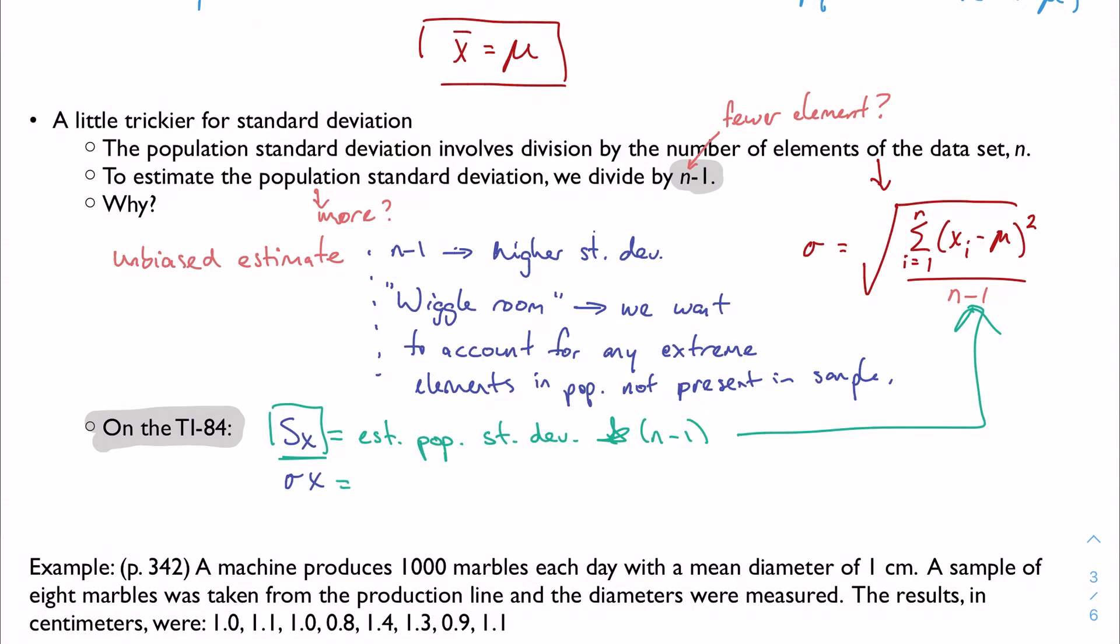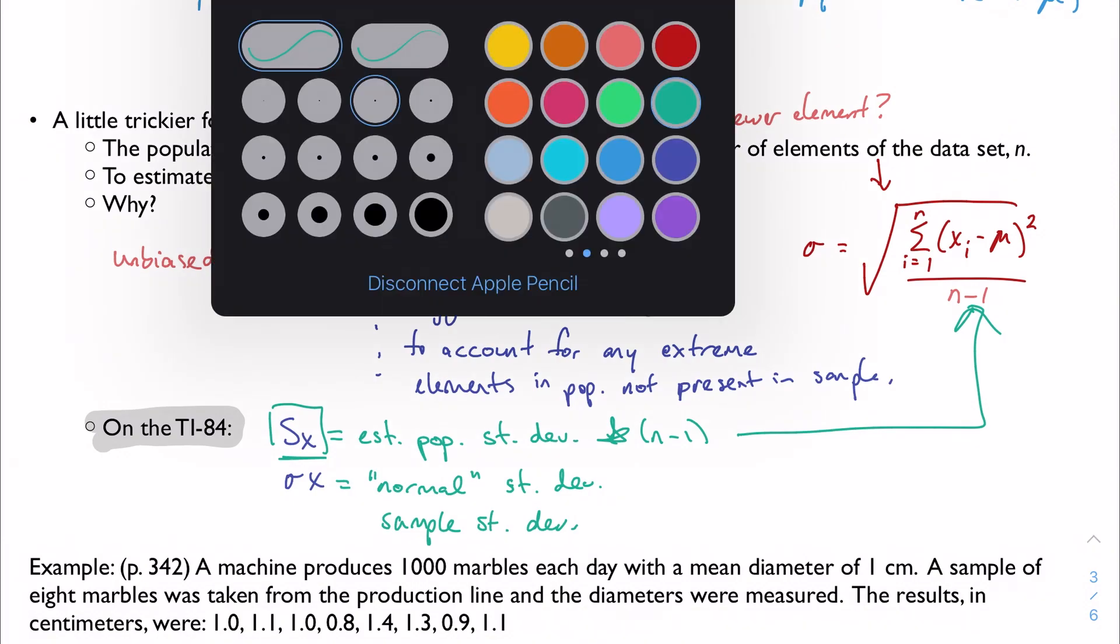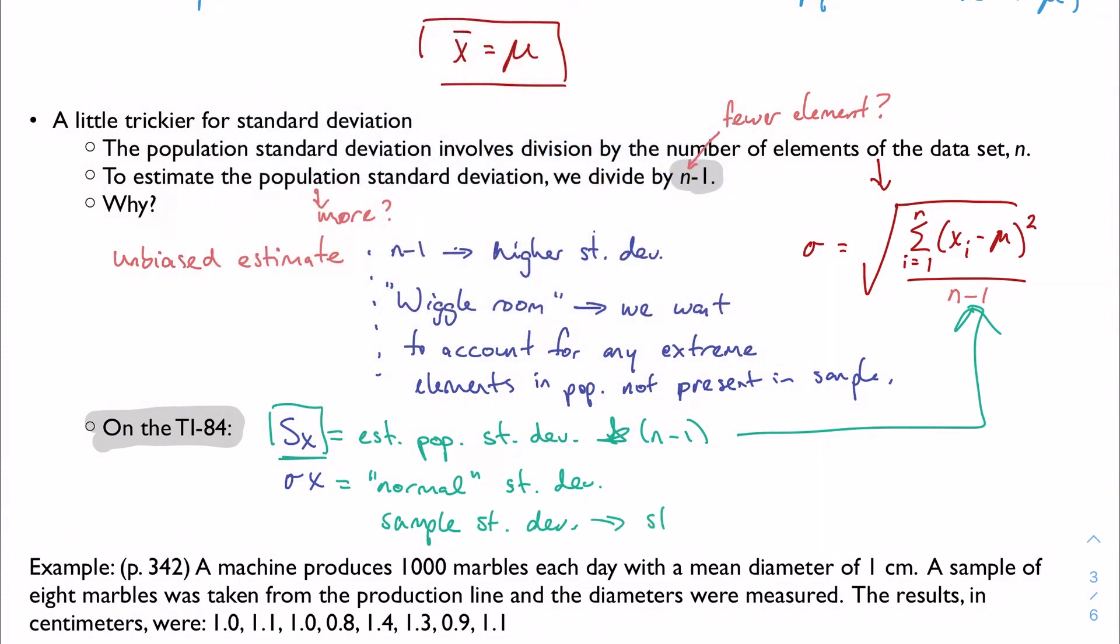Our sigma x is our normal standard deviation. It is effectively our sample, well I don't want to use the word sample because we've used S for sample, but it's our sample standard deviation in the sense that it's the standard deviation of exactly the data entered into the calculator. It kind of assumes that everything I've entered in is actually the population. So that's the standard deviation of just what I've entered into the calculator. So take the word sample here with a grain of salt.